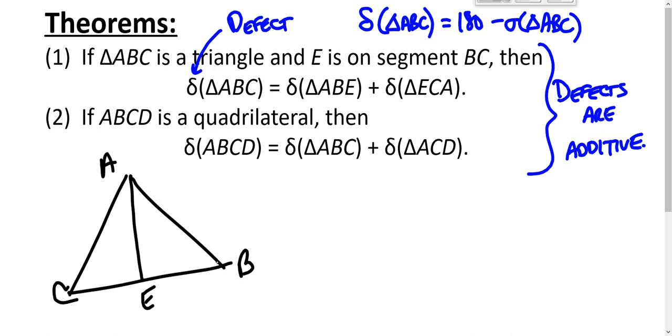So let's throw some things in for good measure: A, B, C, D, E, F. When we say the defect of triangle ABE, that's 180 minus A plus B plus C. And when we say the defect of triangle ECA, we mean 180 minus D plus E plus F.